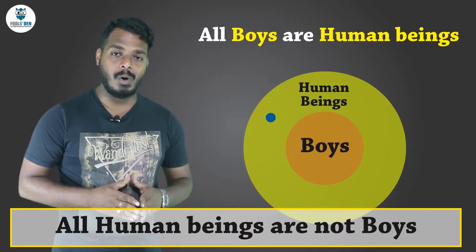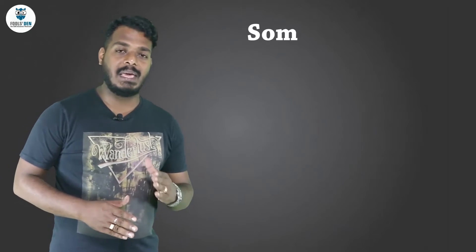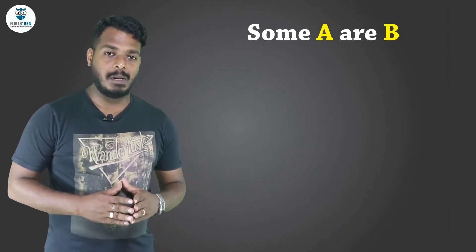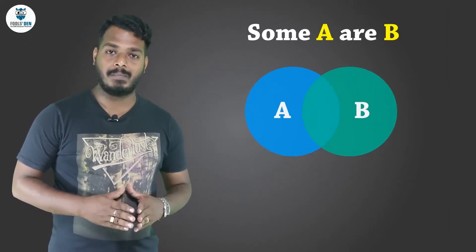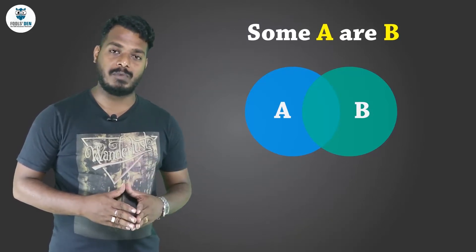So we can definitely say that here all human beings are not boys. Now suppose I say some A are B, that will be represented by this diagram. The first set represents A, the second represents B, and there is some common portion between the two.